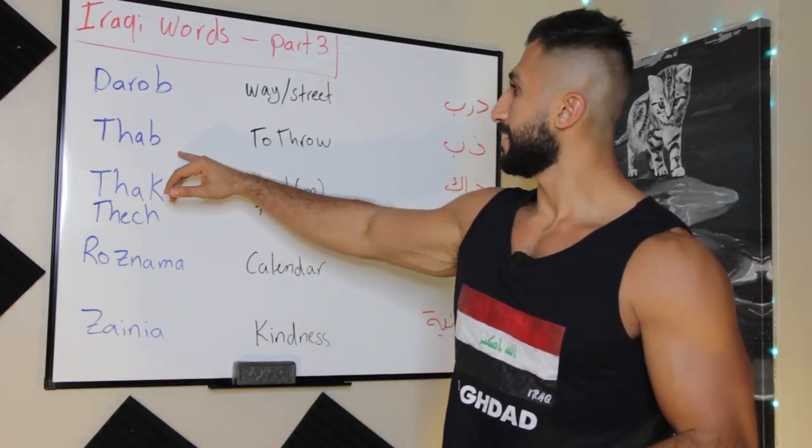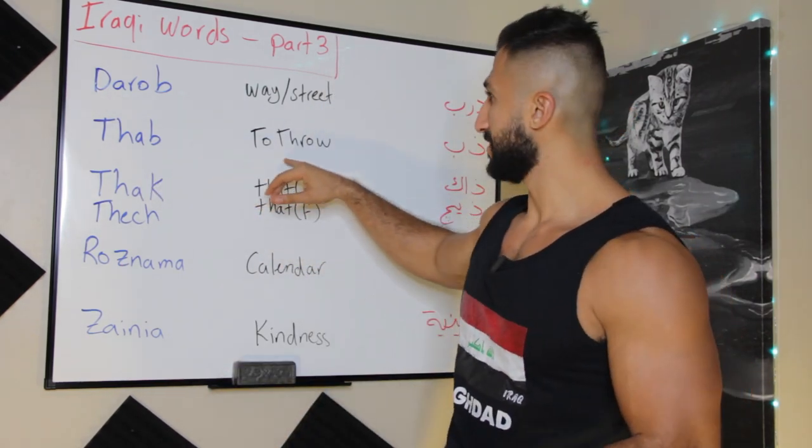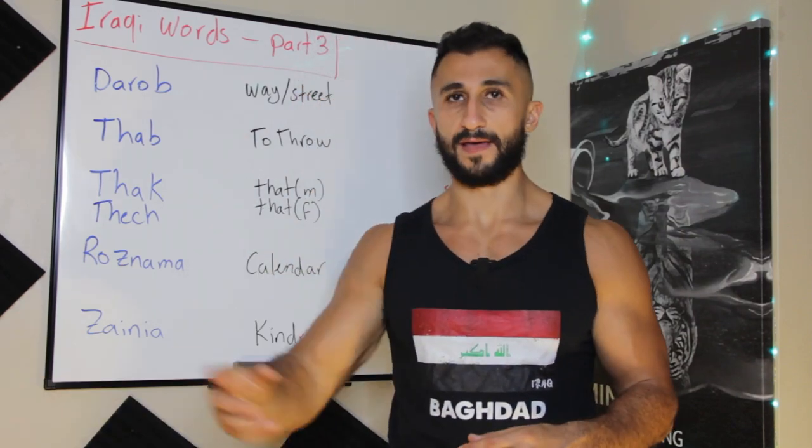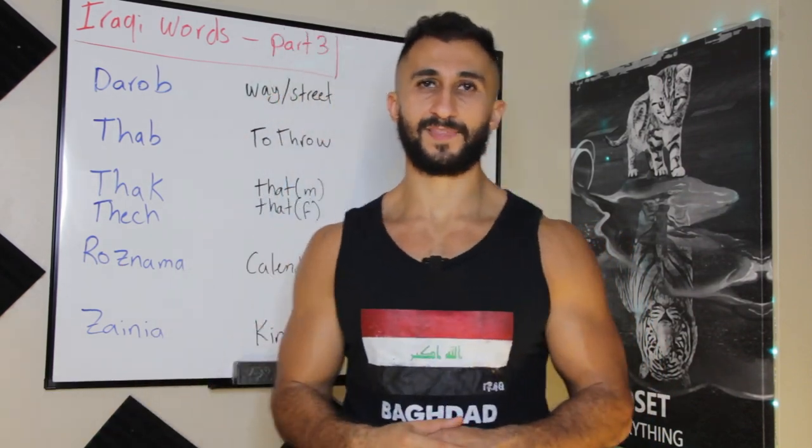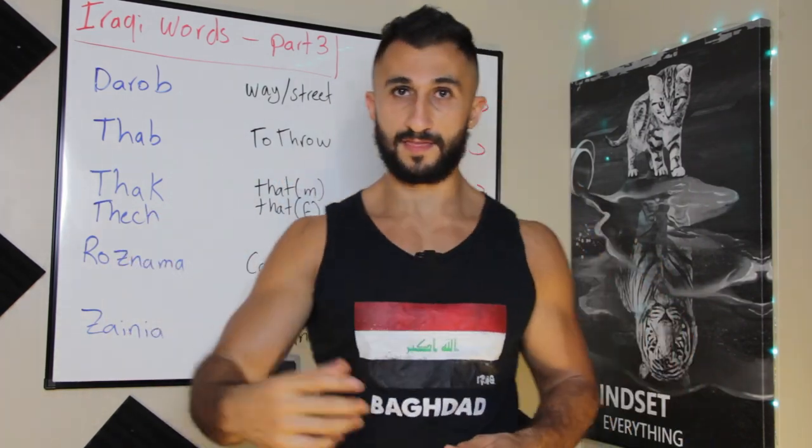The next word is 'thab' — thab is a verb meaning to throw. For example: 'thibbeh bilga' — throw it on the floor. 'Thibbeh' means throw it, and 'ga' means floor.